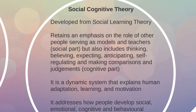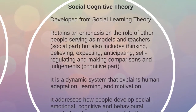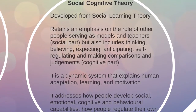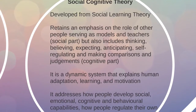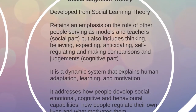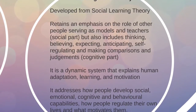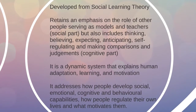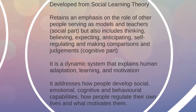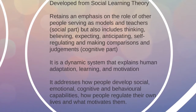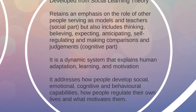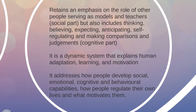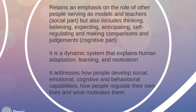Bandura's theory later developed into the social cognitive theory, which retains an emphasis on the role of other people serving as models and teachers, but also includes thinking, believing, expecting, anticipating, self-regulating, and making comparisons and judgments. It addresses how people develop social, emotional, cognitive, and behavioral capabilities, and how people regulate their own lives and what motivates them.